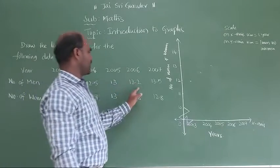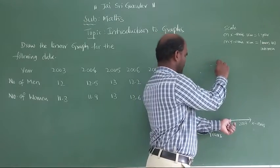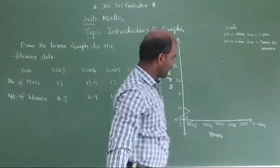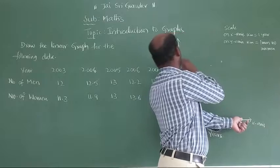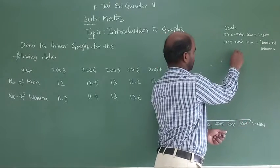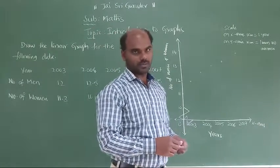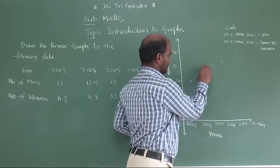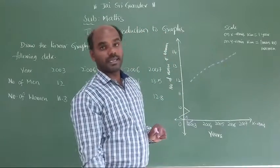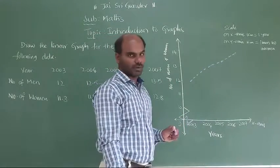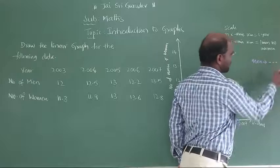Next is 2006, 13.2. 2006, 13.2, that is the second line after 13. Next is 2007, 13.5. 2007, 13.5. This is the linear graph. You want to join with this as a dot line. So this is men shown as a dot line.